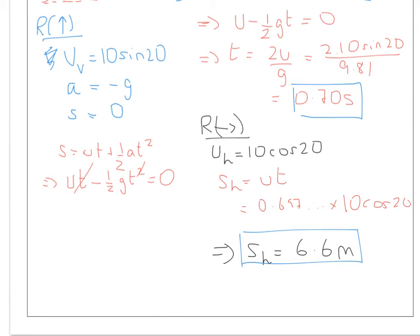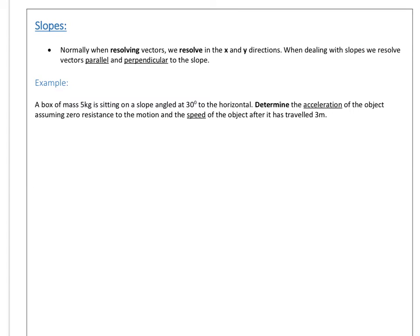Okay, so that's an example of using projectile motion, and very typically we will separate out horizontally and vertically, because gravity acts vertically and not horizontally, so that's very useful to us. So that's projectile motion. Slopes, we treat slightly differently. So instead of resolving horizontally and vertically, or in the x and y directions, what we do is we resolve parallel and perpendicular to the slope.